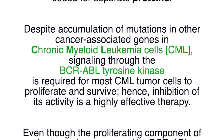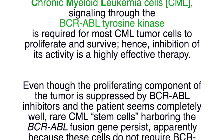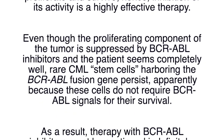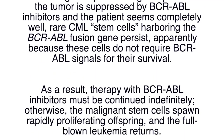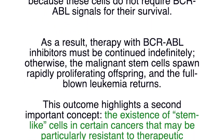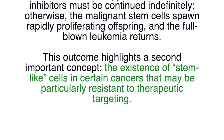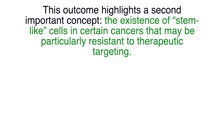Signaling through the BCR-ABL tyrosine kinase is required for most CML tumor cells to proliferate and survive, and inhibition of its activity is a highly effective therapy. Even though the proliferating component of the tumor is suppressed by BCR-ABL inhibitors and the patient seems completely well, rare CML stem cells harboring the BCR-ABL fusion gene persist, apparently because these cells do not require BCR-ABL signals for survival. As a result, therapy must be continued indefinitely; otherwise the malignant stem cells spawn rapidly proliferating offspring and full-blown leukemia returns. This highlights the existence of stem cell-like cells in certain cancers that may be particularly resistant to therapeutic targeting.